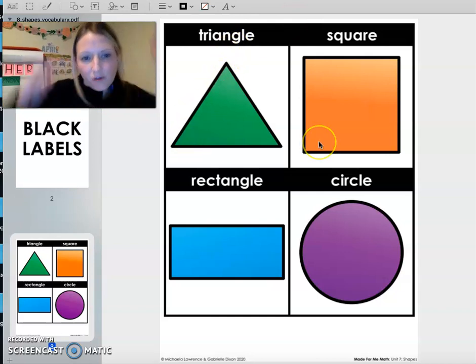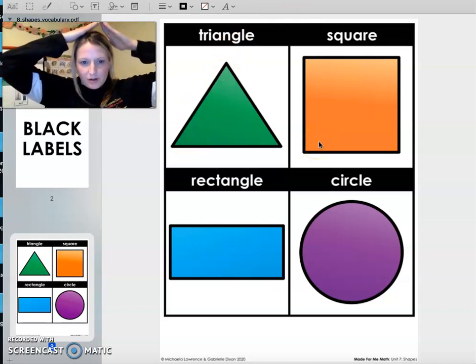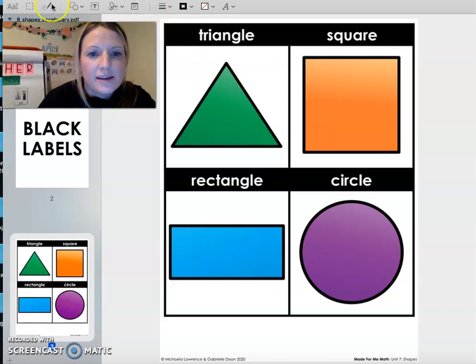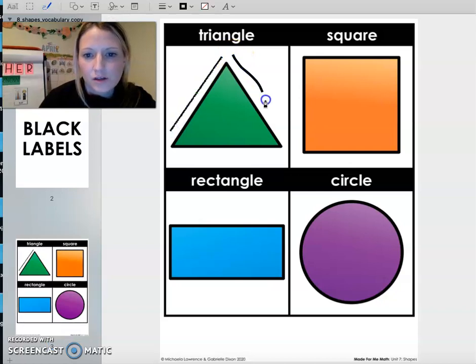The triangle. I always think of that point, and I kind of put it on top like a hat. And we can let's mark it up and count the sides. Ready? We have one, two, three sides on a triangle. So remember, triangle, three sides. Triangle dance, just like in GoNoodle.